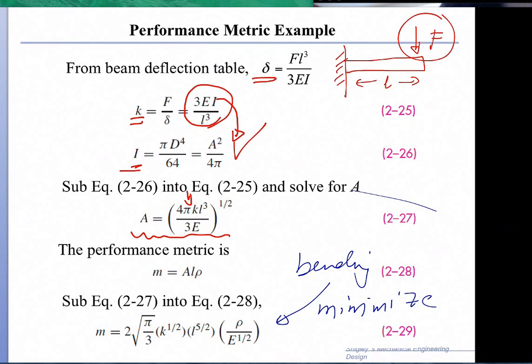Again, like we did for the case of uniaxial tension, the mass is equal to the area times the length times the density, the volume times the density. Substituting, we find that the property that needs to be minimized is rho divided by E to the 1/2. So you notice here that E to the 1/2 for the case of bending.